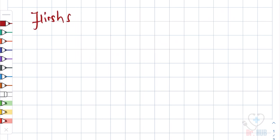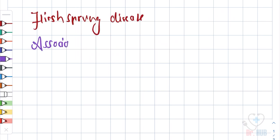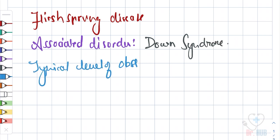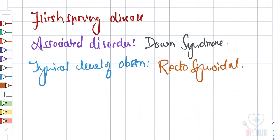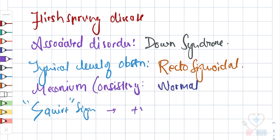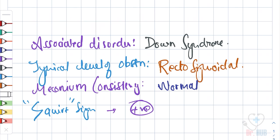In case of Hirschsprung Disease, the associated disorder includes Down syndrome. The typical level of obstruction includes the recto-sigmoidal region. Meconium consistency is normal, and the squirt sign is positive.